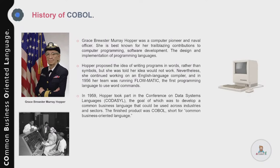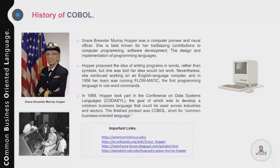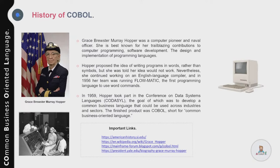Grace Hopper proposed the idea of writing programs in words rather than symbols, but the idea was not initially supported by the community. Nevertheless, she continued her work on an English-language compiler, and in 1956 her team was running FLOW-MATIC, the first programming language to use word commands. In 1959, she took part in the Conference on Data Systems Languages, the goal of which was to develop a common business language that could be used across industries.